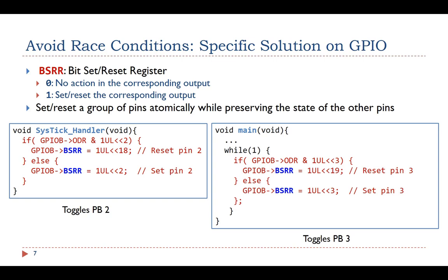Therefore, the BSRR register allows software to set or reset a group of pins atomically, while the state of the other pins are preserved. This shows the implementation of the SysTick interrupt handler and the main function — this implementation avoids the race condition shown previously. Read the STM32L4 reference manual to find out more information on BSRR.